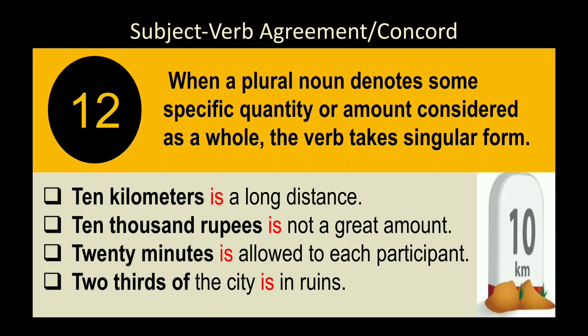Rule 14: When a plural noun denotes a specific quantity or amount considered as a whole, the verb takes singular form. Examples: 'Ten kilometres is a long distance.' '10,000 rupees is a large amount.' '20 minutes is a short time period.' 'Two-thirds of the city is affected.' All these are treated as single units and take singular verbs.